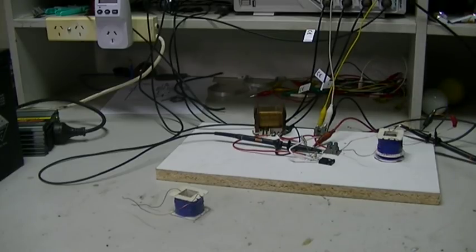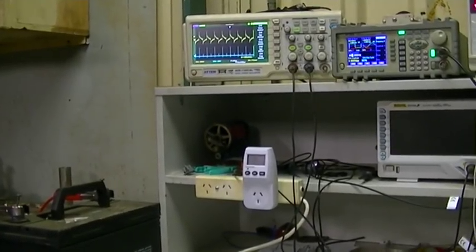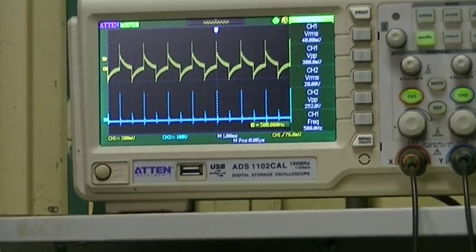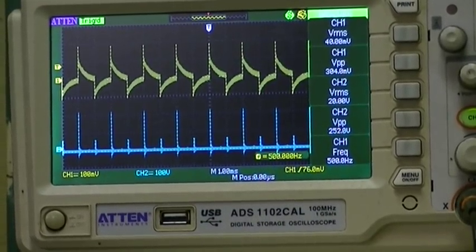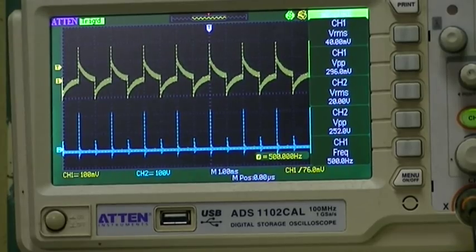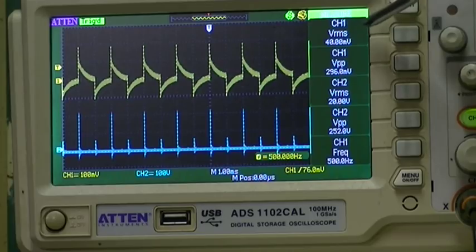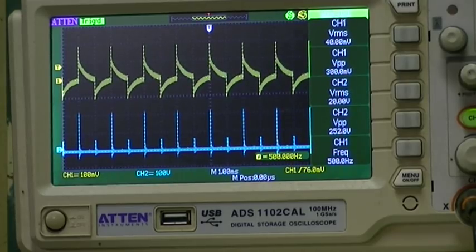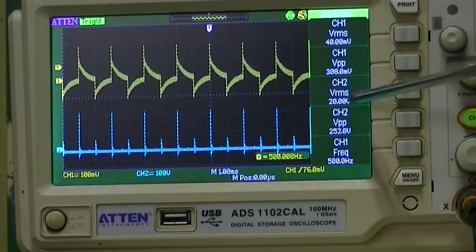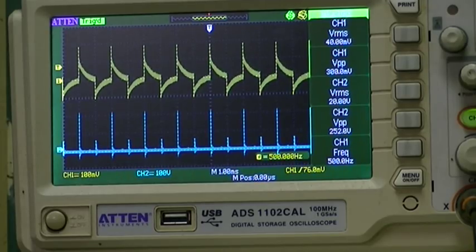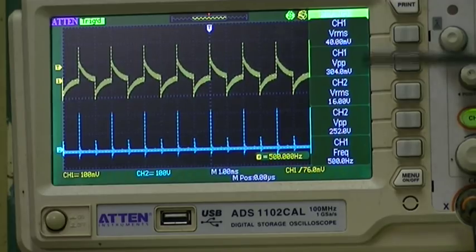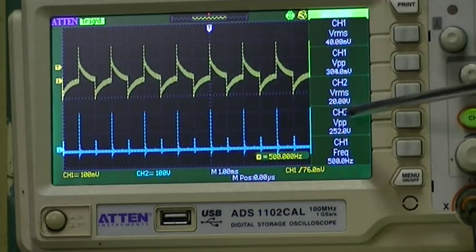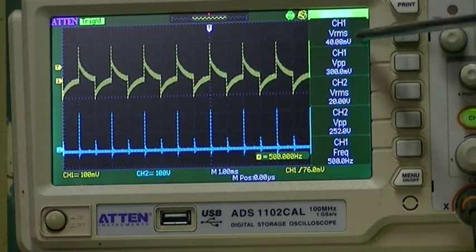And we're going to have a look at our scope shot once again to see what difference we have. Right there. So on here, well now we only have 40 mV RMS across our 100 ohm loads. So that has actually gone down a bit. That is sitting on there properly.